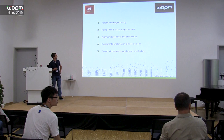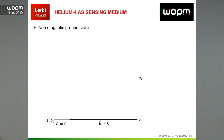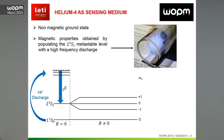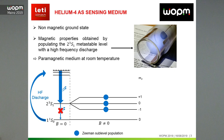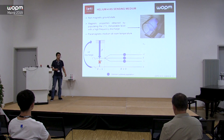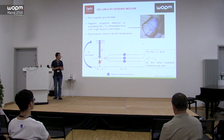Helium-4 for magnetometry. The helium-4 in its ground state is a non-magnetic medium. So if you want to probe a magnetic field using helium-4, you need to excite the atoms. We use a high-frequency discharge to excite the atoms toward really high energy levels, and they will relax through a radiative decay toward the 2-3-S1 metastable level, staying there for a long time because the transition toward the ground state is doubly forbidden. In the end, we have a paramagnetic medium at room temperature with a plasma, and in terms of magnetic multipole moments, only the population is non-zero.